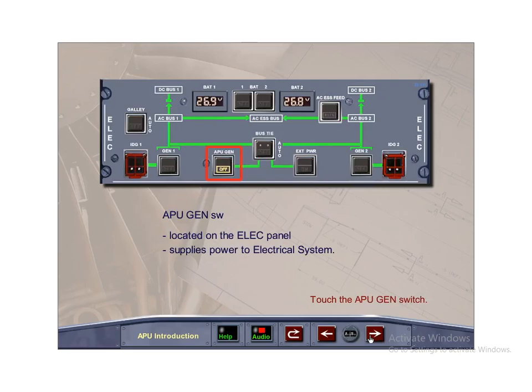The APU Generator switch is located on the electrical panel. The APU Generator supplies power to the electrical system when needed. The switch is normally left in the on, light off position.